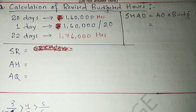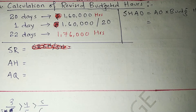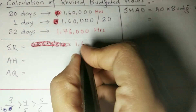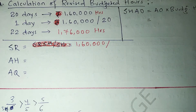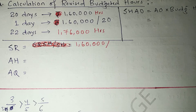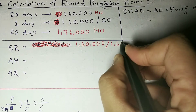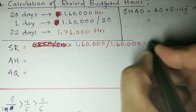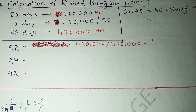Next, we calculate the Standard Rate (SR). Budgeted fixed overhead is 1,60,000. Dividing by standard hours — which is 8,000 × 20 = 1,60,000 hours — gives SR = 1,60,000 ÷ 1,60,000 = 1. So your Standard Rate is 1 rupee per hour.